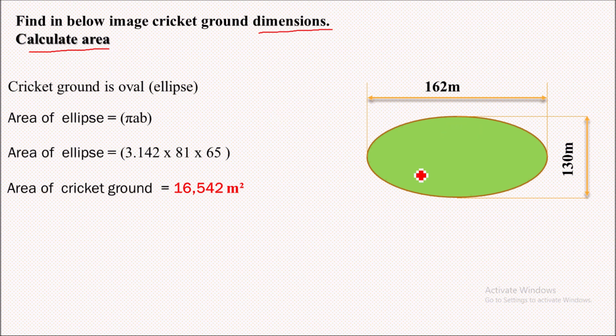Basically this cricket ground is oval in shape. Oval is elliptical in shape, so it is ellipse. We are provided with the major axis dimension that is 162 meter, which is the major axis of ellipse, while 130 meter is the minor axis of ellipse.